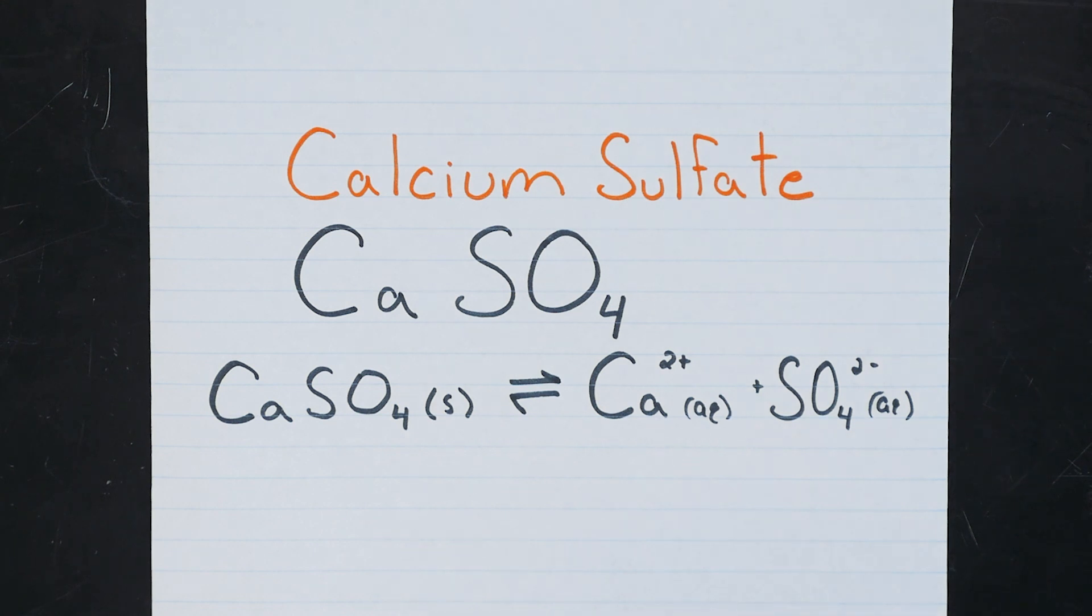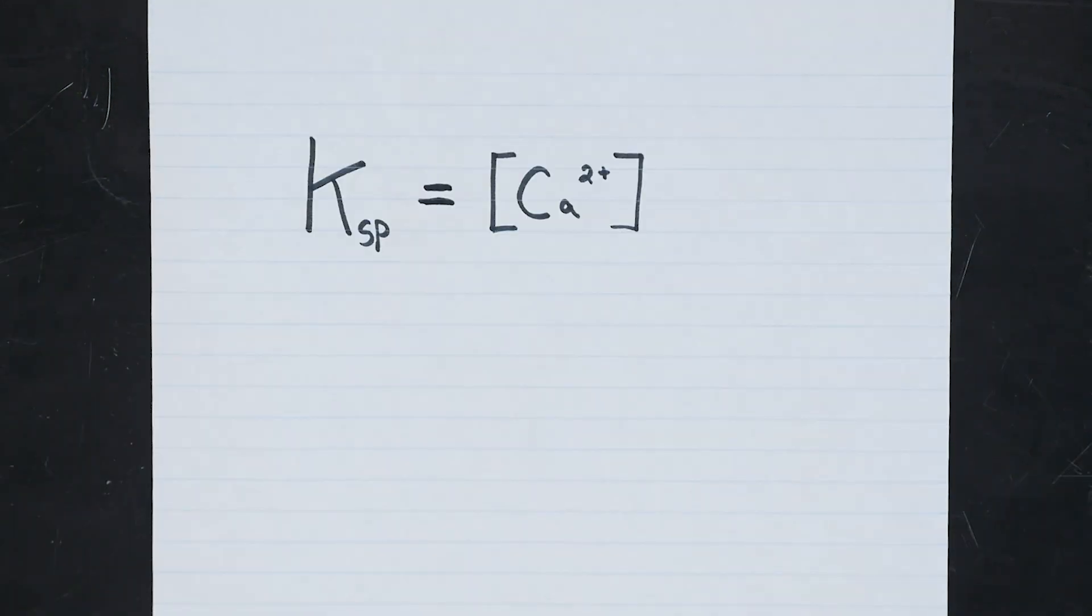This solubility can be measured if we could measure the concentration of one or more of the ions that are supposed to be created. This is related to the equilibrium constant for this process, which, because it's a dissolution process, is known as a solubility product constant, with an sp as a subscript. So the Ksp value is actually a numerical measure of the solubility of a salt.